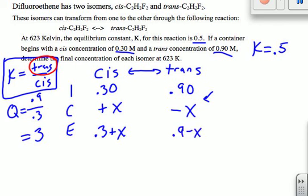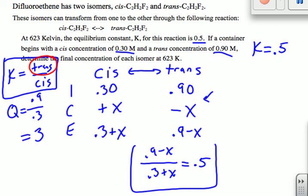And again, all we're looking for is the final concentrations. We need to find out what x is. Well, what do we know? We know that 0.9 minus x, that's the equilibrium concentration of the trans isomer, divided by 0.3 plus x is going to equal our K value, which is 0.5. So at this point, it is just an algebraic problem. And the chemistry is pretty much done. We just need to solve for x here.